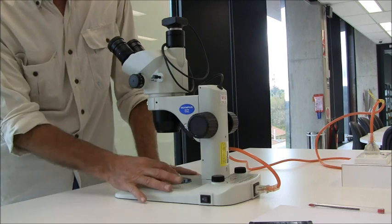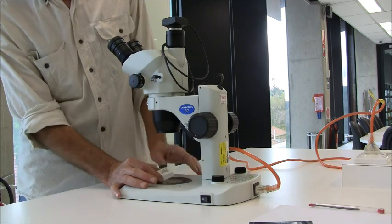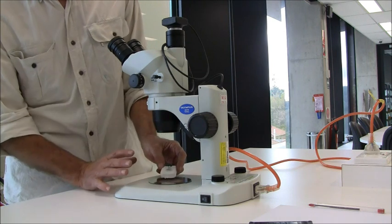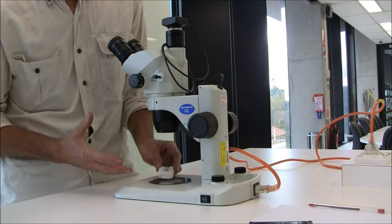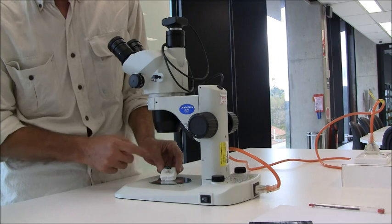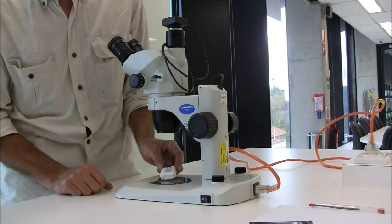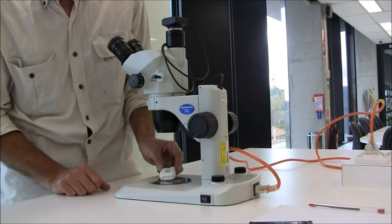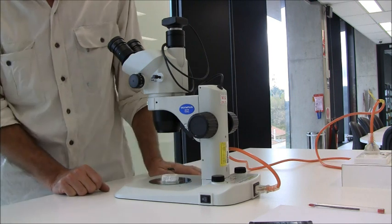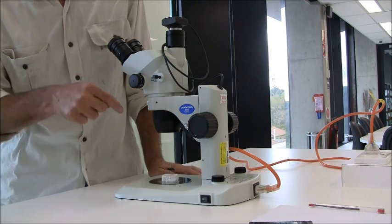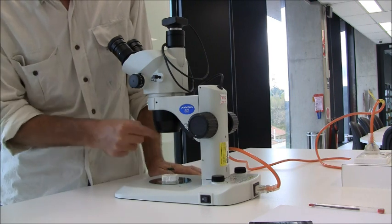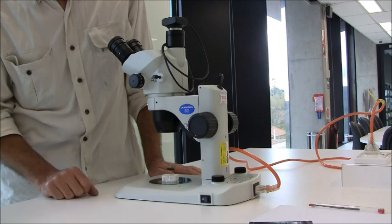It's called a dissecting microscope because you can do dissections under it. It doesn't magnify things very strongly, but you can certainly see a lot of detail on specimens like insects. It fundamentally works by bouncing light off the specimen through a series of lenses and into your eye.